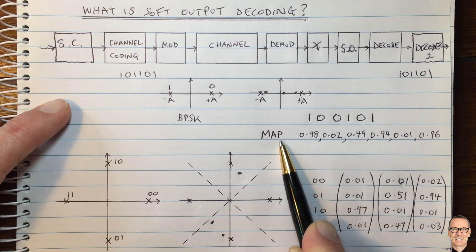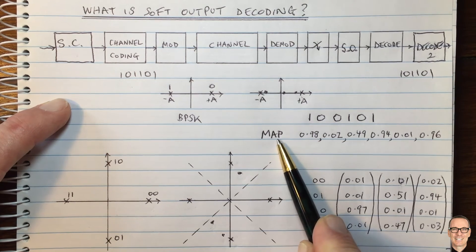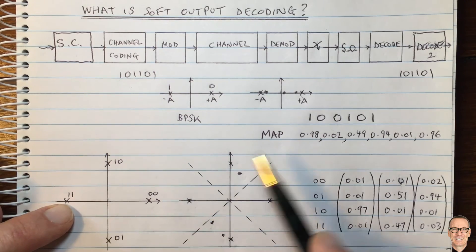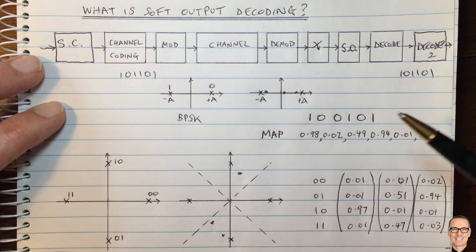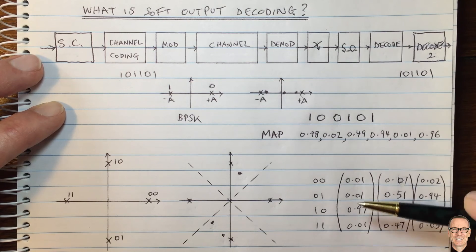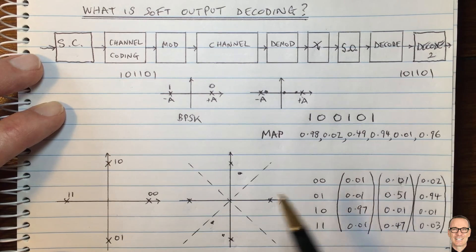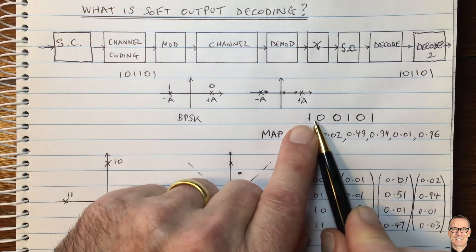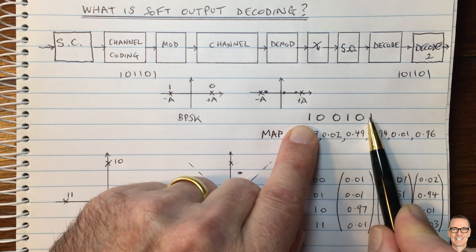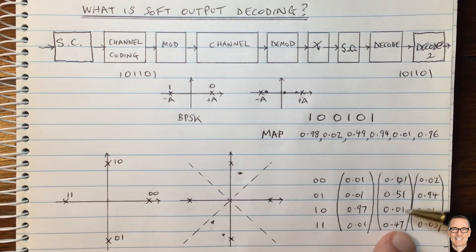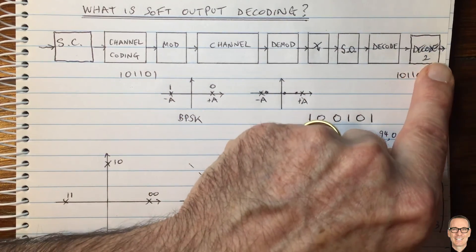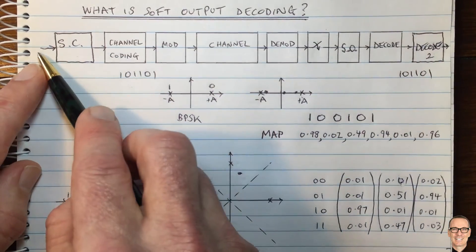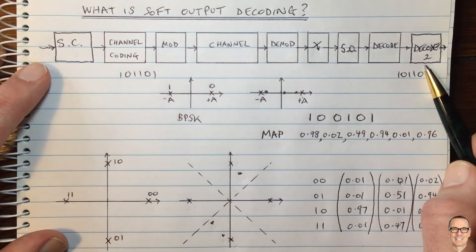It doesn't have to be maximum a posteriori probabilities — you could also use likelihood functions or log-likelihood functions. And it doesn't have to be symbol-by-symbol detection; it could be sequence detection, for example using the BCJR algorithm or the Soft Output Viterbi Algorithm (SOVA). All of these provide numbers indicating the probabilities or likelihoods of different symbols given the measured value, rather than making hard decisions. Every time you make a hard quantization to ones and zeros you throw away information, so this approach keeps all that information for as long as possible through the decoding chain.